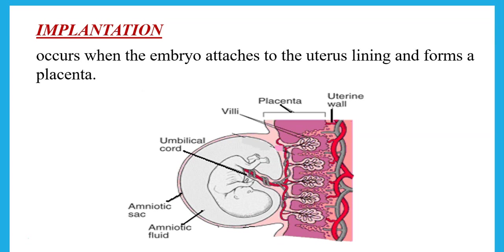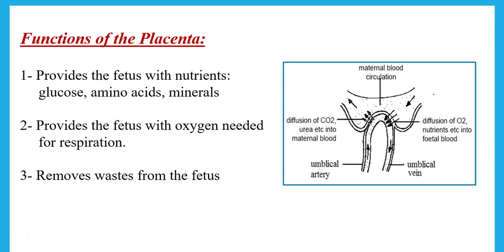The placenta has blood vessels of the fetus running very close to blood vessels of the mother so that substances can diffuse in and out. From mother to fetus, glucose, amino acids, minerals, and oxygen diffuse across to support the fetus. The placenta also removes wastes from the fetus — carbon dioxide from respiration and urea diffuse from the fetus's blood to the mother's blood.